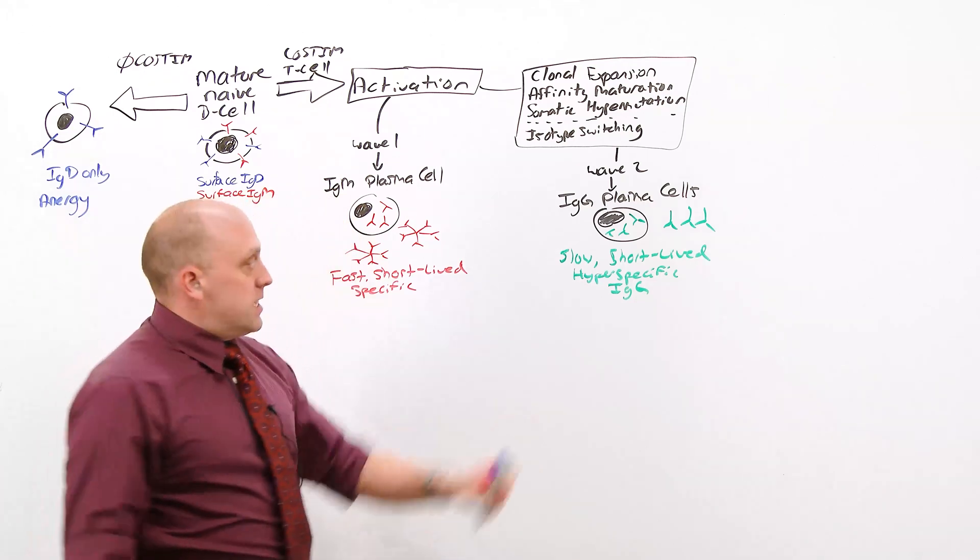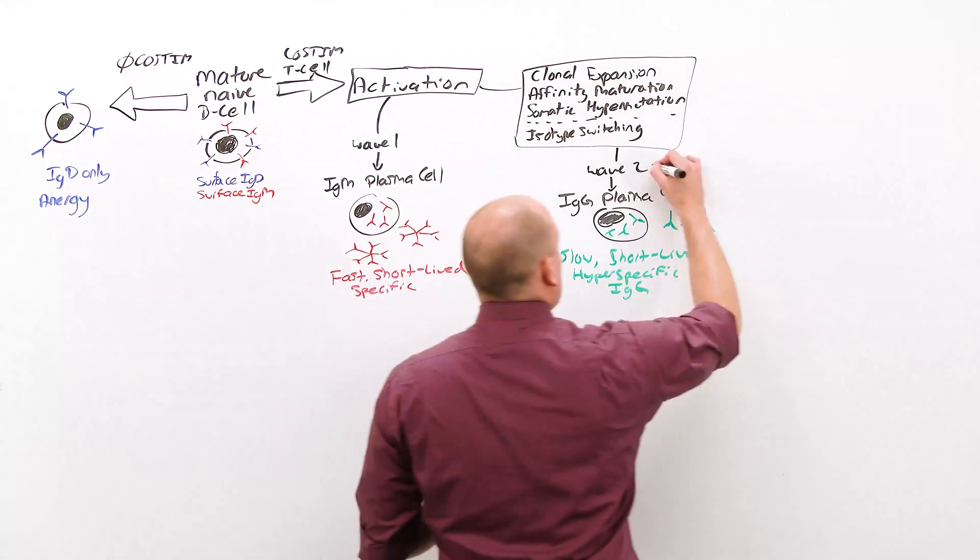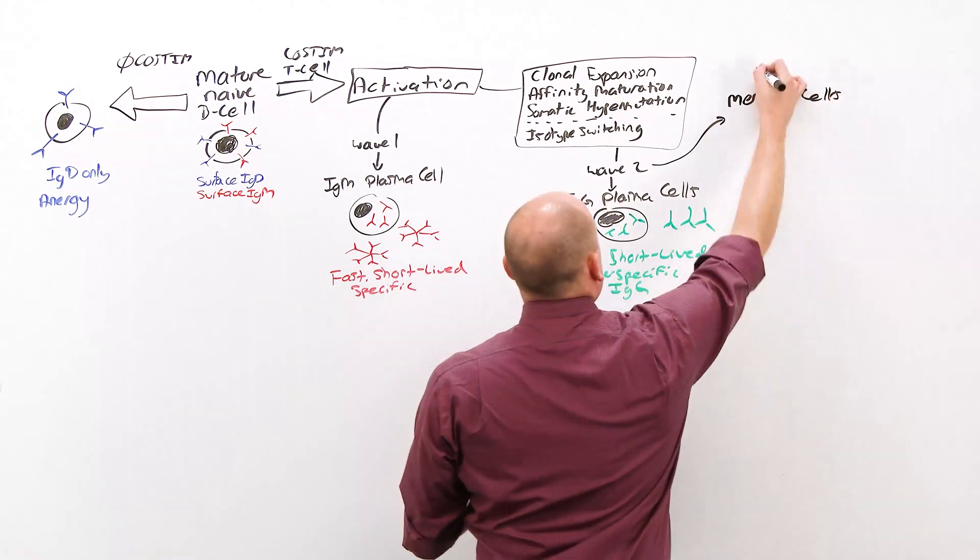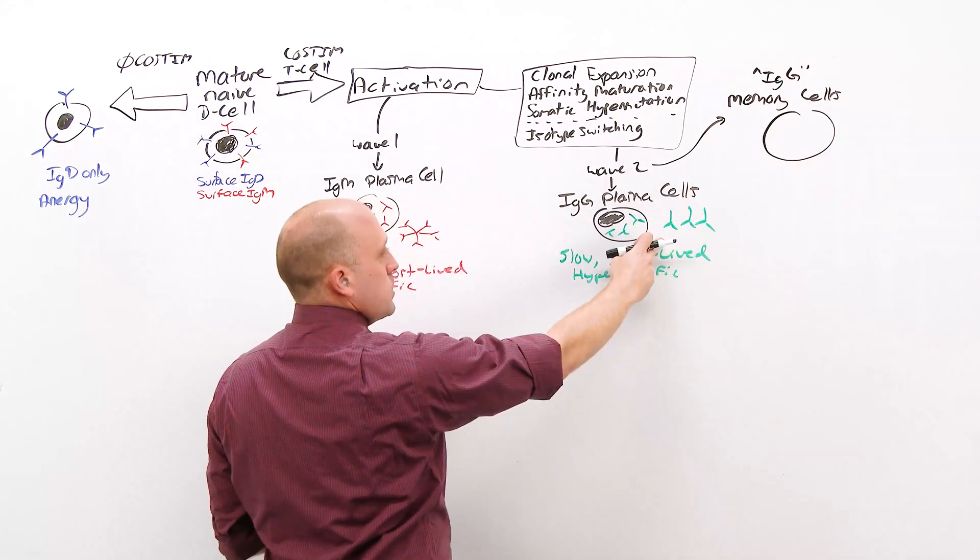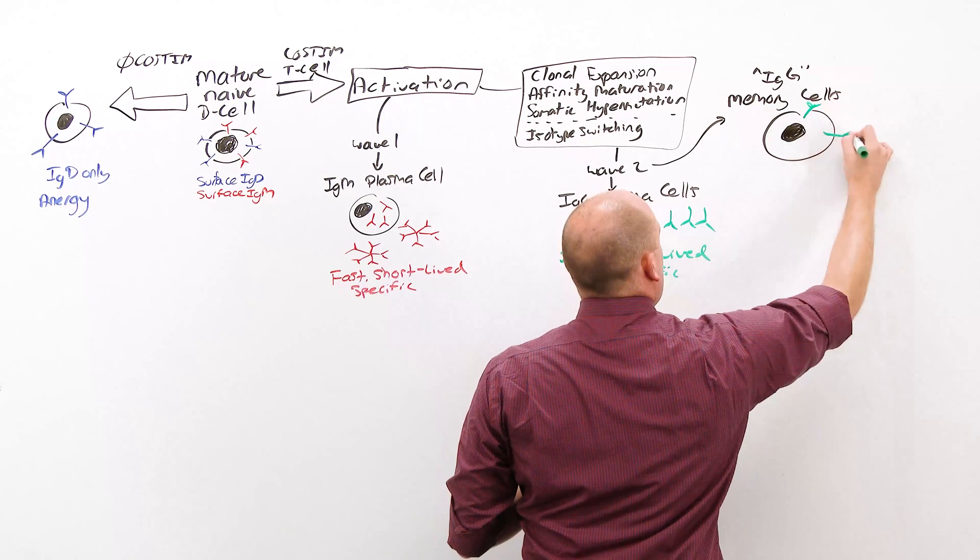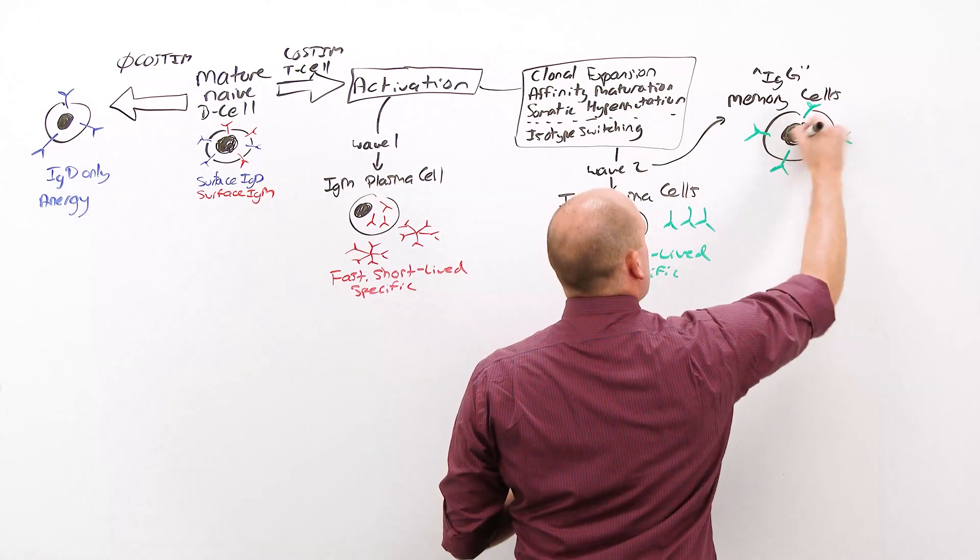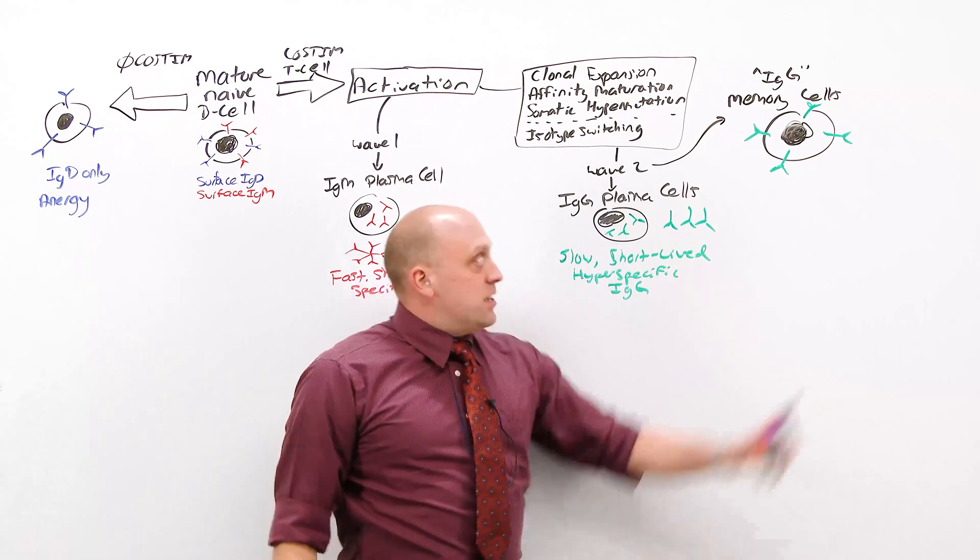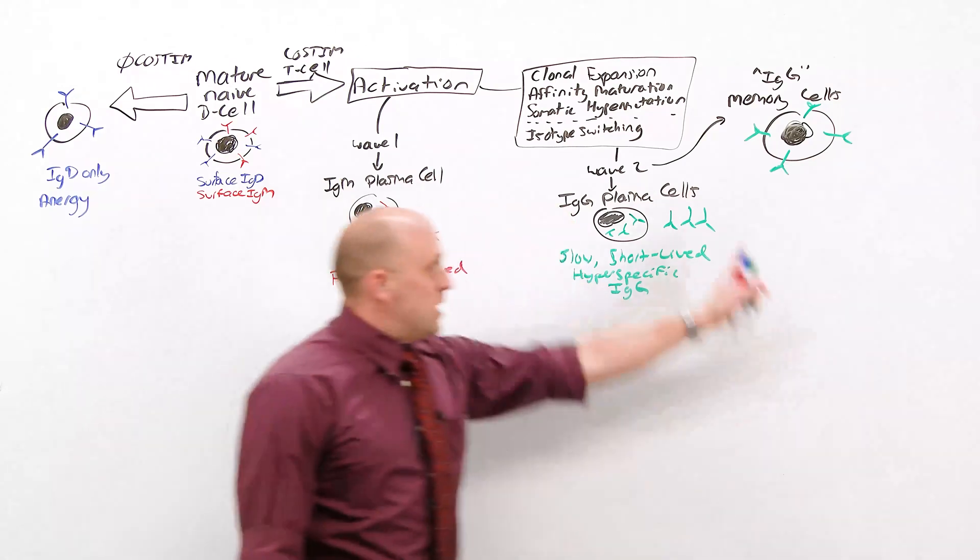The same clones, the same cell lines that differentiate into plasma cells, can also differentiate into a smaller subset, a very small population of memory cells. Now, memory cells can be considered IgG, because the immunoglobulin they have is the same as the immunoglobulin that's released by these plasma cells as an antibody, only it's going to be on their cell surface. And this cell acts as a surveillance cell, just like the mature, naive B-cell did. Only now, there's no IgD, there's no way to make them anergic. And these immunoglobulins have the same hyperspecificity, the same high affinity that these antibodies do.